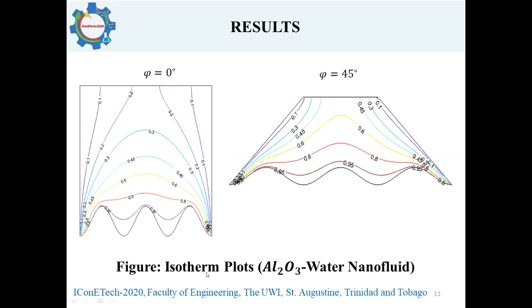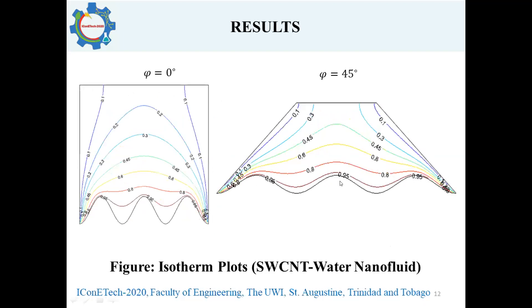The isotherm plots for alumina-water nanofluid show that as the angle of inclination of the sidewalls increases, there is an increase in the temperature within the nanofluid. The same trend is observed for the SWCNT-water nanofluid. However, the temperature within the SWCNT-water nanofluid is lower than that of the alumina-water nanofluid, due to the greater thermal conductivity of SWCNT-based nanofluids.